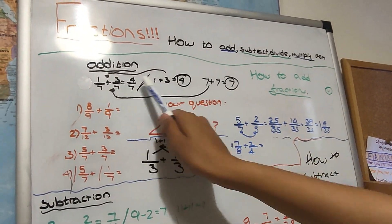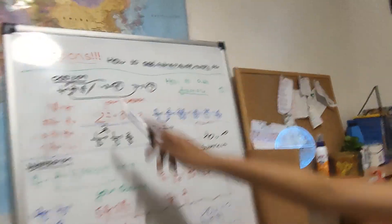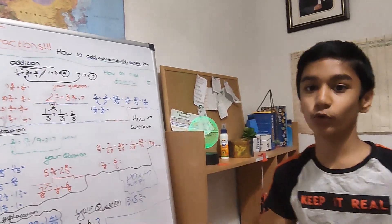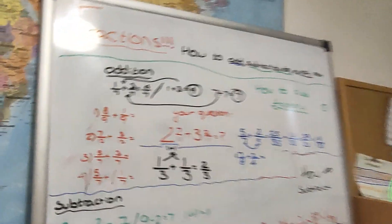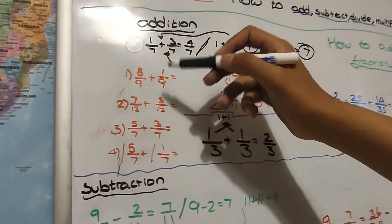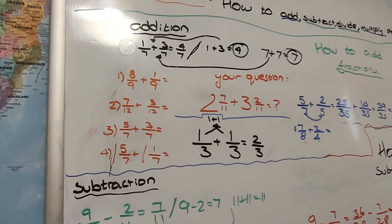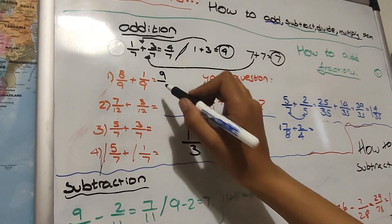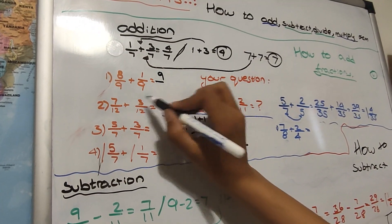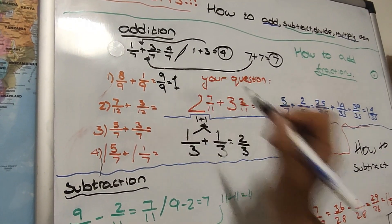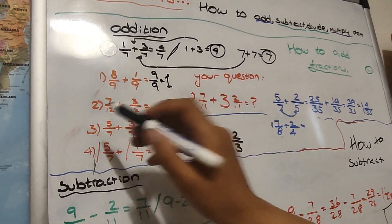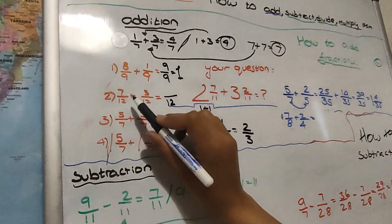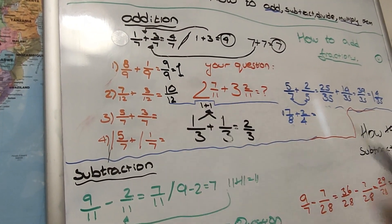So that's a quick diagram on how to add fractions. Now I will just do some quick examples with you all. Here's what you should always do: 8/9 add 1/9. First you do 8 add 1 which is 9 — remember the denominator stays the same, which is 9, which is equal to 1 whole. Now the denominator stays the same so it's 12. 7 add 3 is 10.